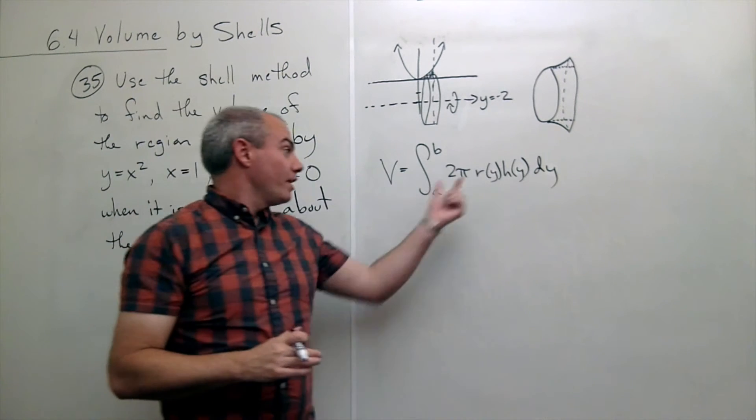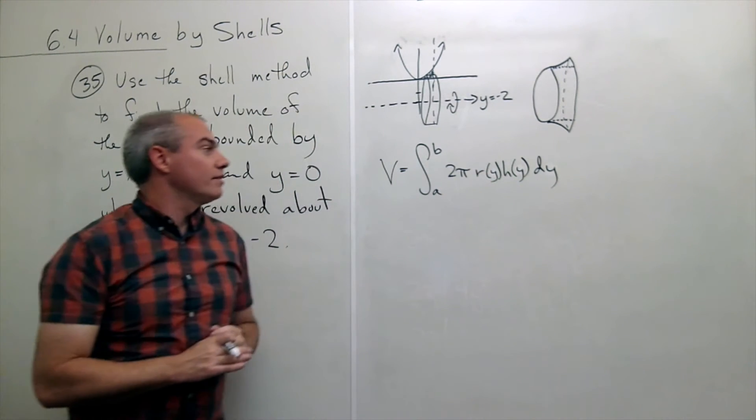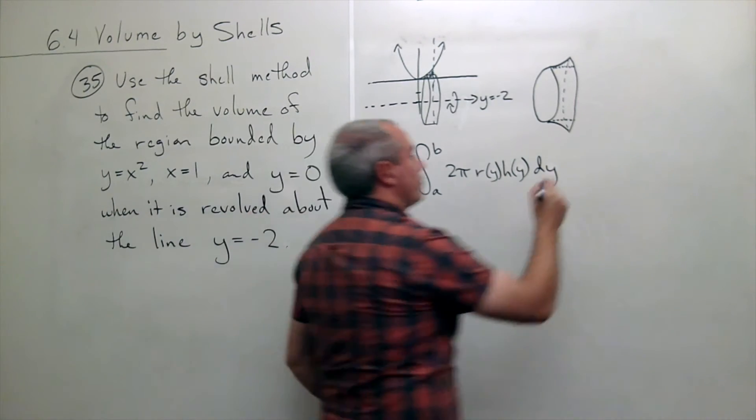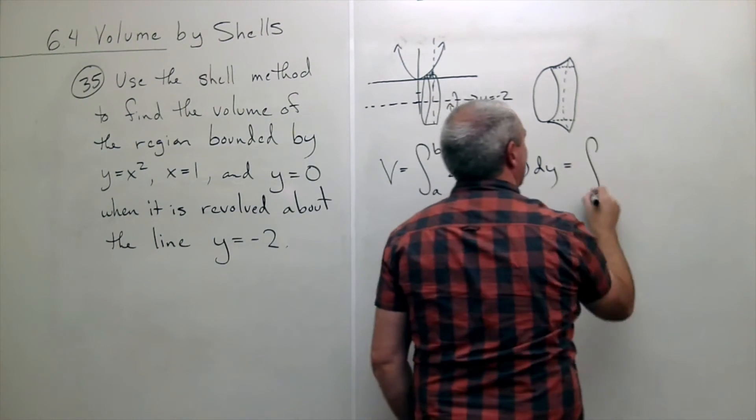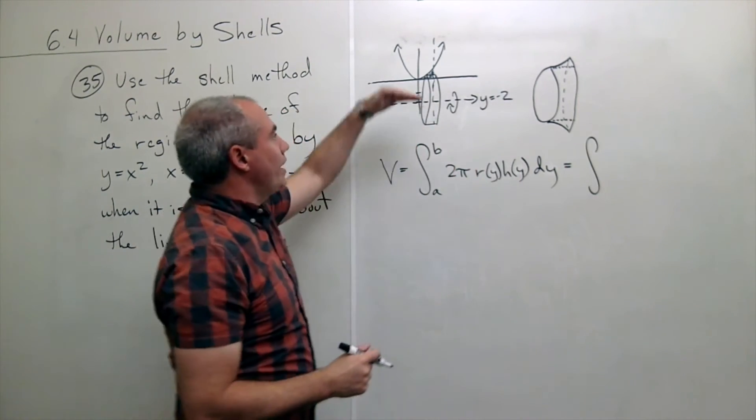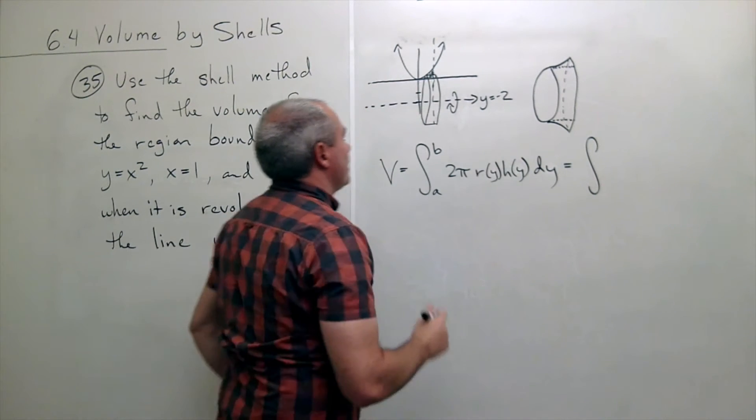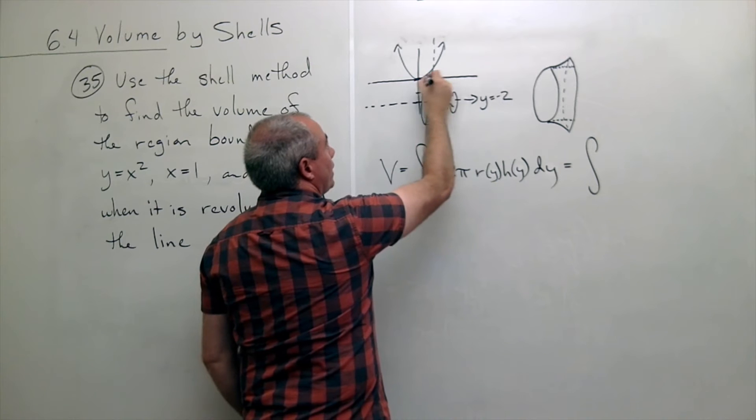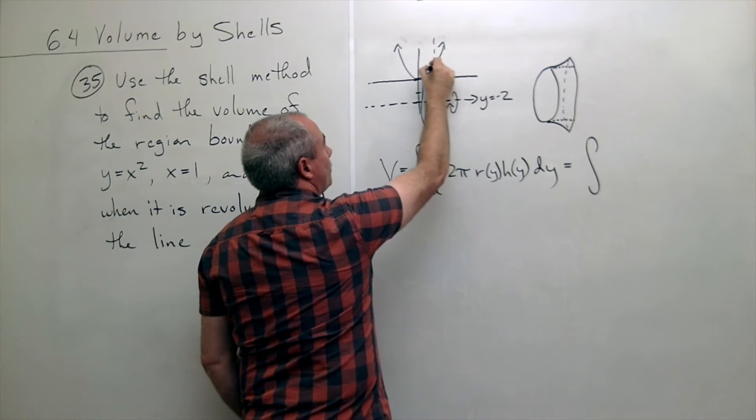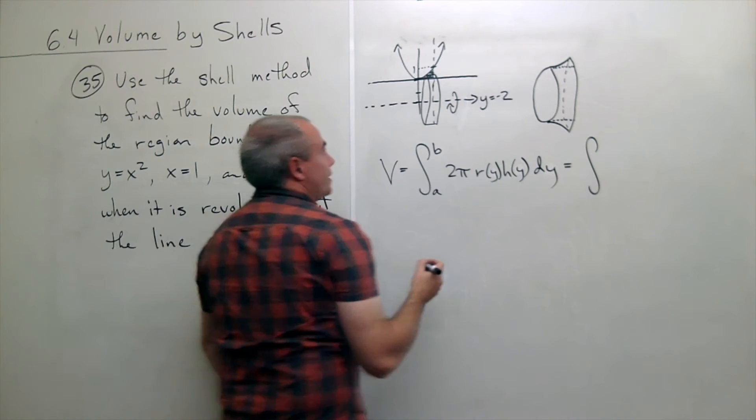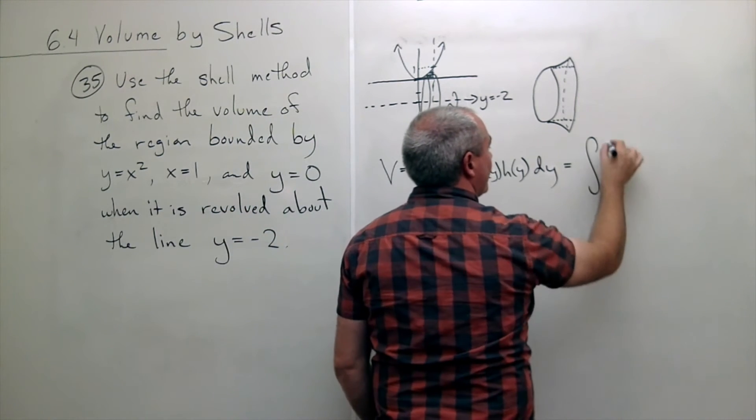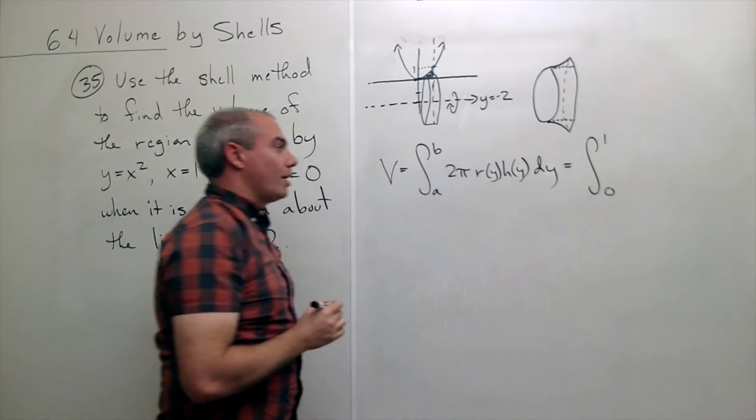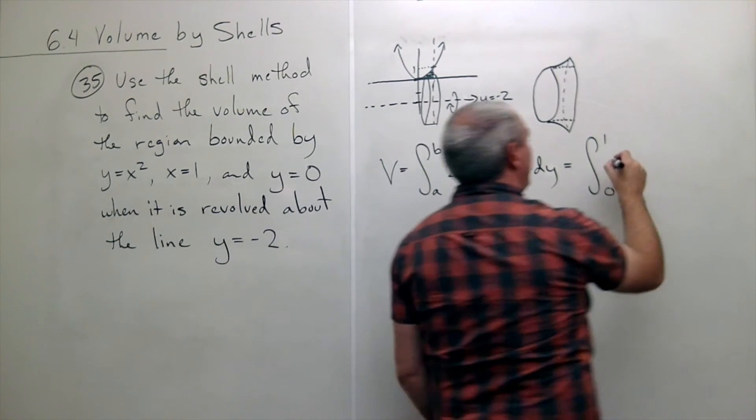We just need to put in the pieces to integrate this thing. This is the integral from a to b, but where do I start cutting and where do I stop cutting? Well, this we know is zero and I'm integrating this up one more unit, which is one. So in this case, I'm integrating from the y value zero to the y value one of two pi.